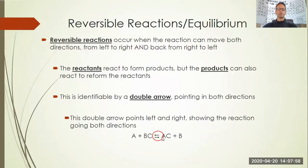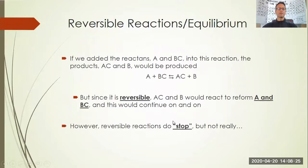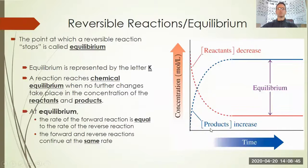When you see the double arrow, that means not only can A combine with BC to produce AC + B, but AC + B can also react to produce A and BC. So you get reactants producing products, and then those products in essence reacting to produce more reactants. If we added the reactants A and BC into the reaction, the products AC and B would be produced, but since it's reversible, AC and B would react to reform A and BC, and that continues.